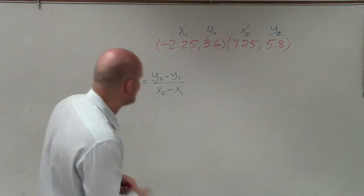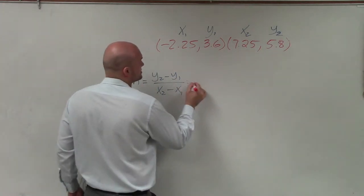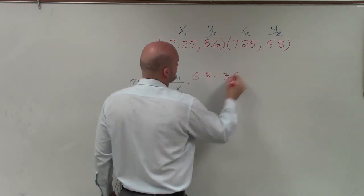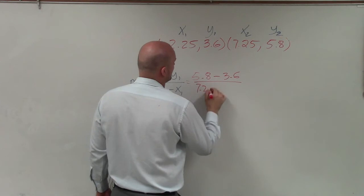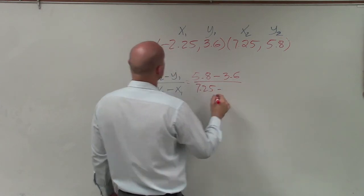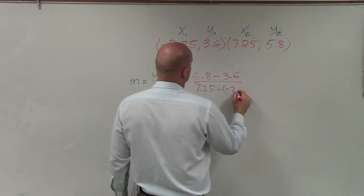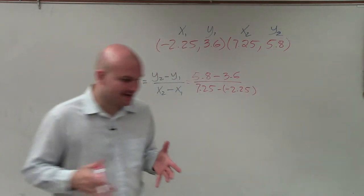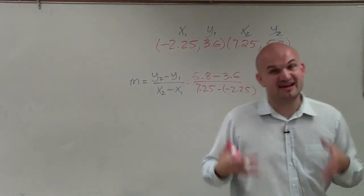All right. So to go ahead and do that, now I'm just going to plug in my points. So I have 5.8 minus 3.6 all over 7.25 minus a negative 2.25. And notice how I put my negative 2.25 in parentheses.